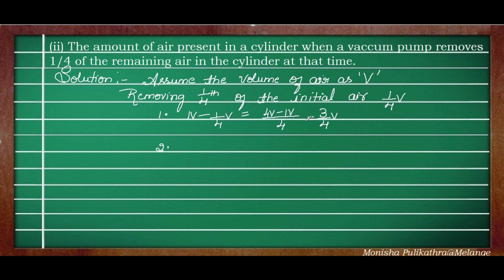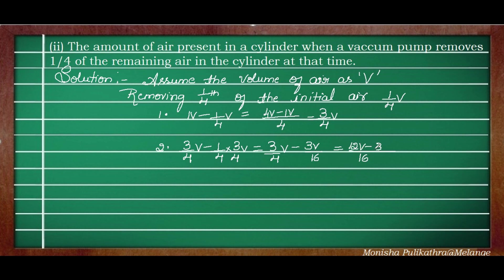In the second stroke, the current air is 3V/4. We remove 1/4th of 3V/4. So remaining = 3V/4 − 3V/16. LCM is 16: (12V − 3V)/16 = 9V/16. After the second stroke, the remaining air is 9V/16.